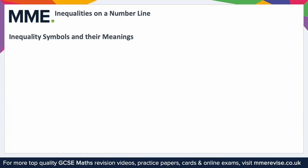Before being able to draw inequalities on a number line, we first must understand some of the notation that is used. For example, this symbol here means greater than. So you could say nine is greater than seven. Notice the open side is next to the bigger number, so nine is greater than seven.